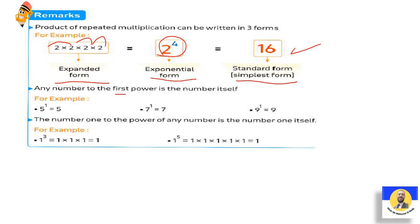أي حاجة to the number 1 تطلع معنا الـNumber نفسه. زي 5 to the power 1 = 5، 7 to the exponent 1 = 7، 9 to the exponent 1 = 9. The number 1 to the power of any number is the number 1 itself. يبقى 1 to any power تطلع الـ1 زي ما هي ما تتغيرش. Any number with exponent 1 = the number itself; 1 with any power = 1.